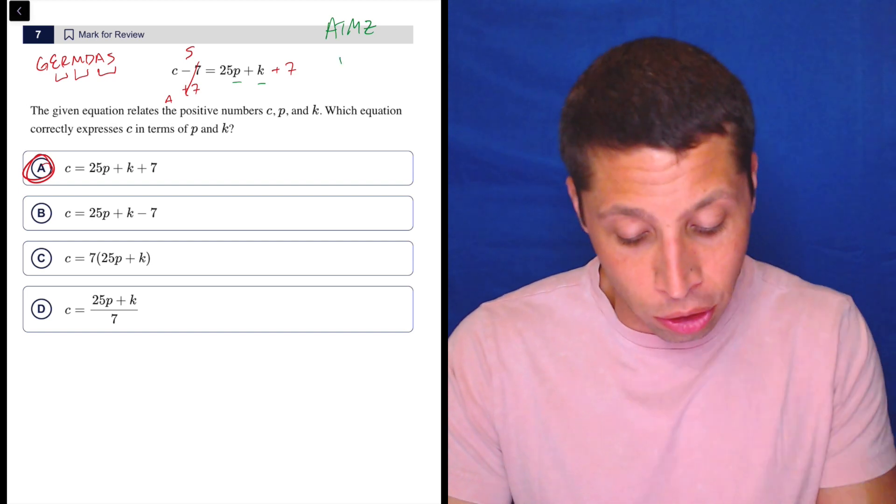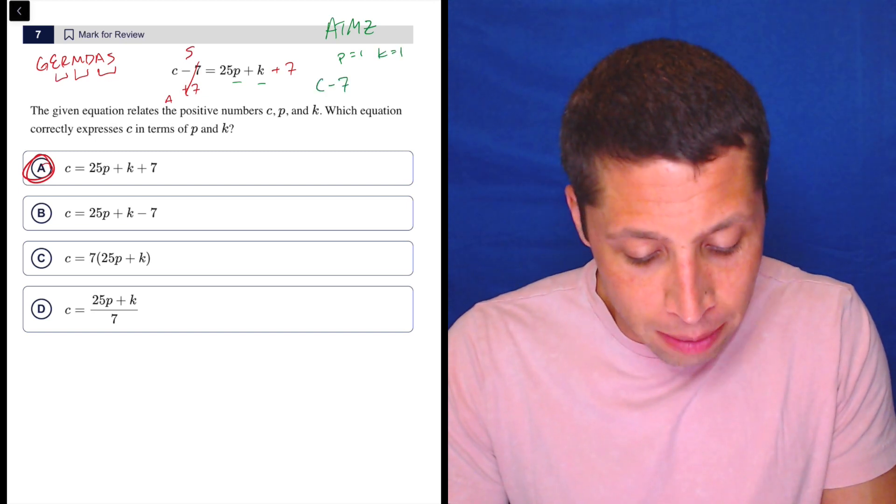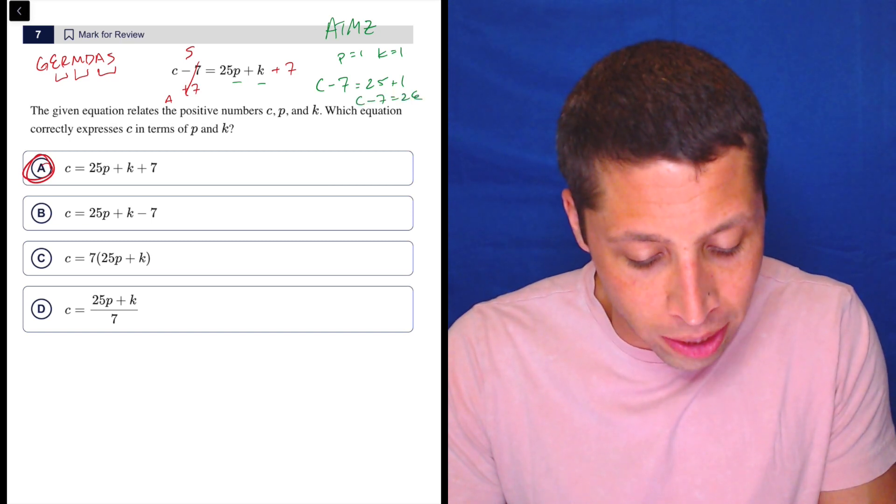So you just keep it simple. You could just do P is one, K is one, and then we'd have C minus seven is equal to 25 plus one. So C minus seven is 26.